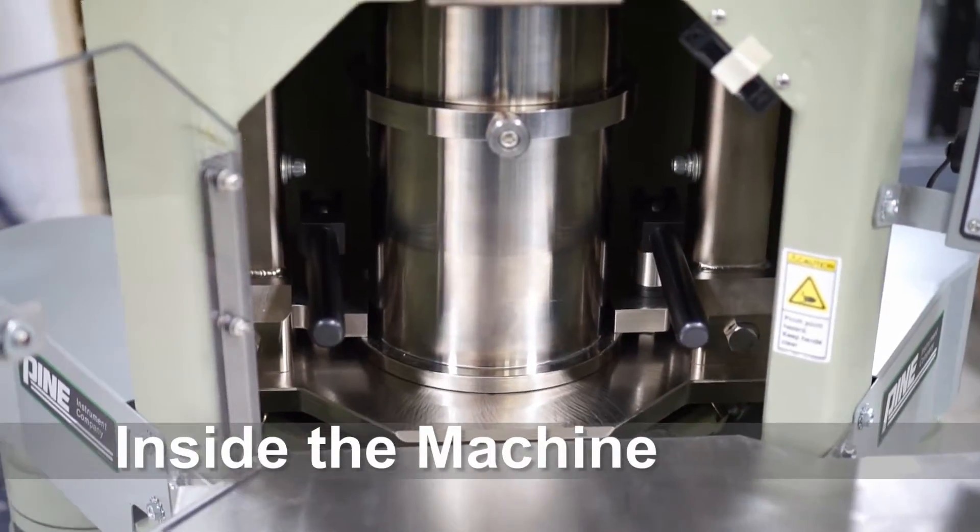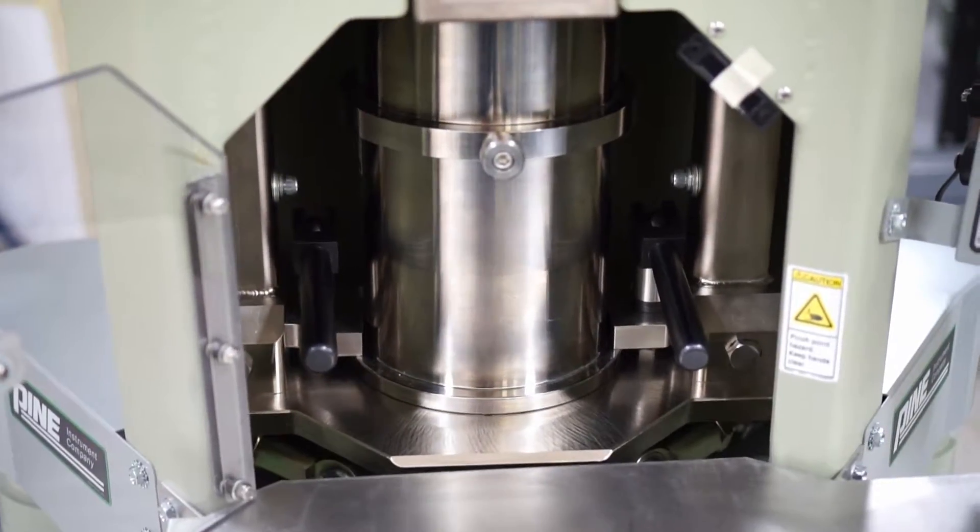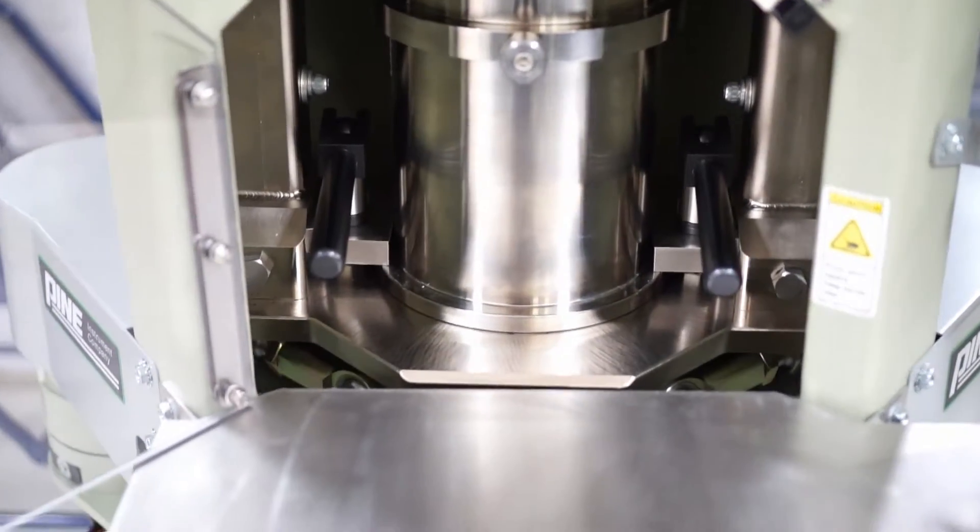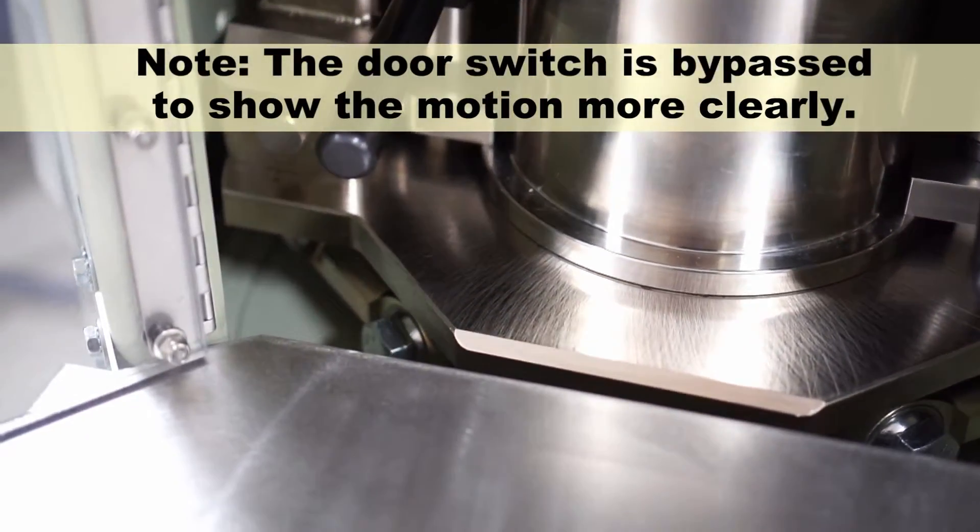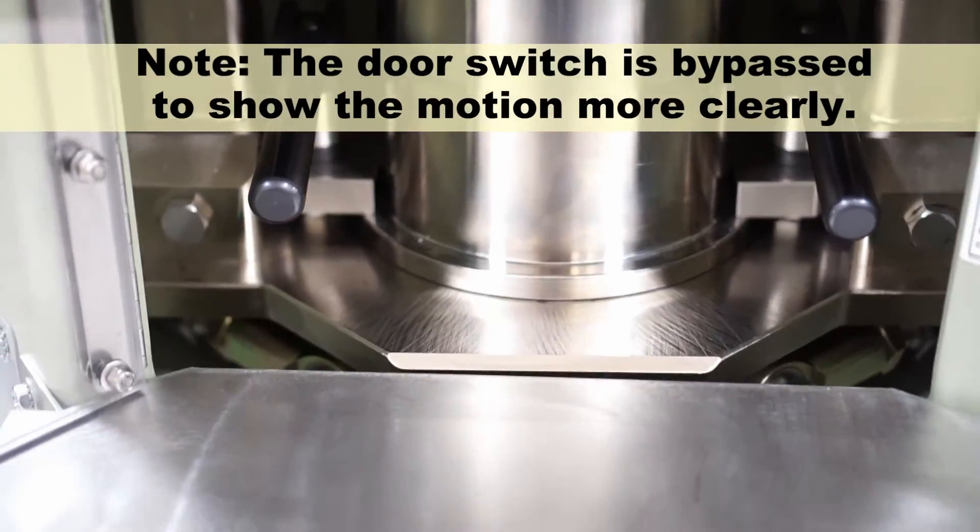Inside the machine, the base plate swivels the mold about its vertical axis, while the ram applies pressure to the specimen from below. Note that the door switch has been bypassed in this video clip to show the motion more clearly.